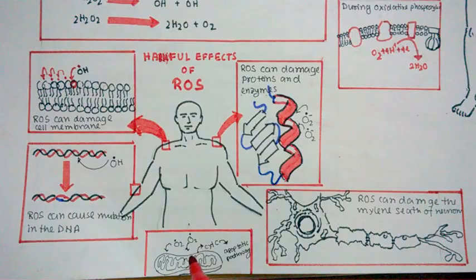If ROS actually caused damage to the mitochondrial membrane, then there is a chance that cytochrome c would be leaked out into the cytoplasm. And once cytochrome c is leaked into the cytoplasm, cytochrome c could activate Apaf-1.